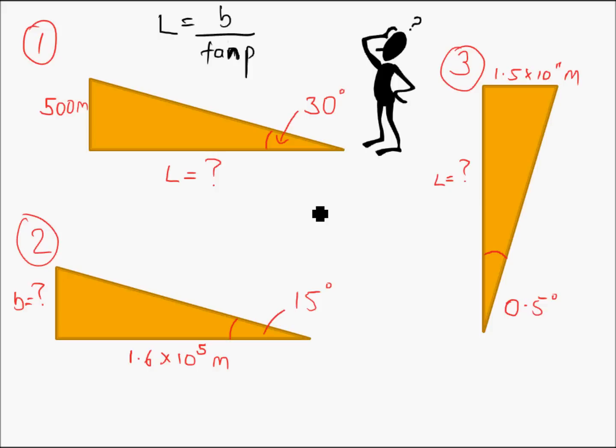All right, hopefully you've had a go at that. I'm going to quickly run through them now with you. So question one: we've got B is over here, we've got our angle P is 30 degrees, and we're trying to find L. So L is going to be equal to 500 divided by tan 30. So in my calculator, I do 500 divided by tan 30, and it comes up with an answer of L is equal to 866.